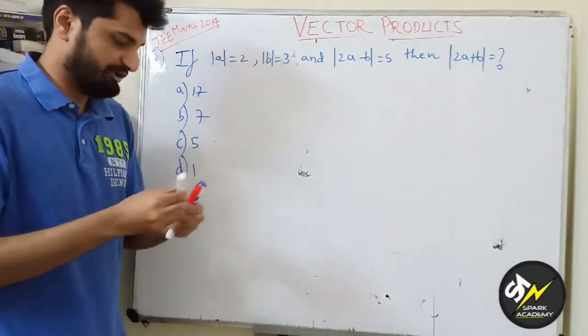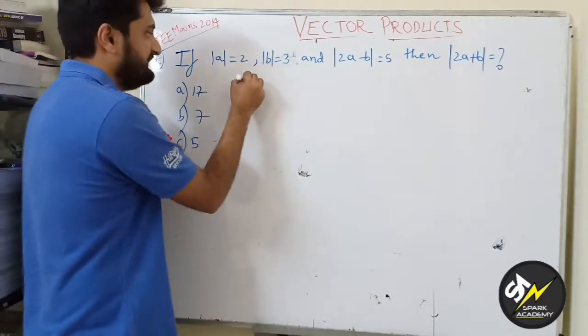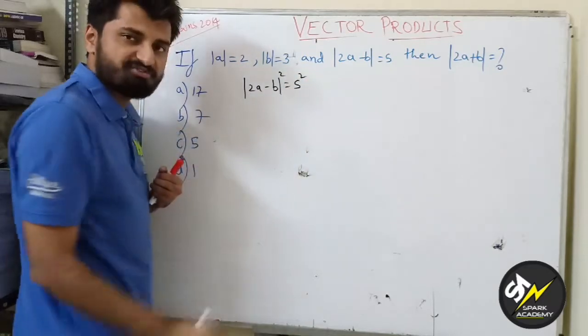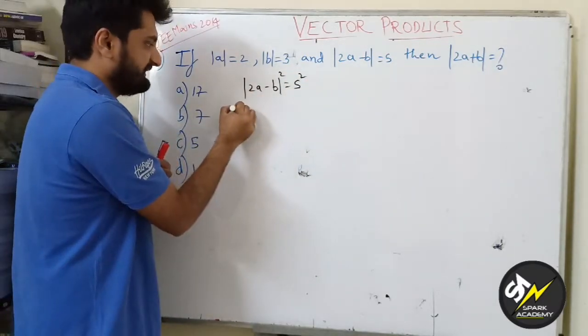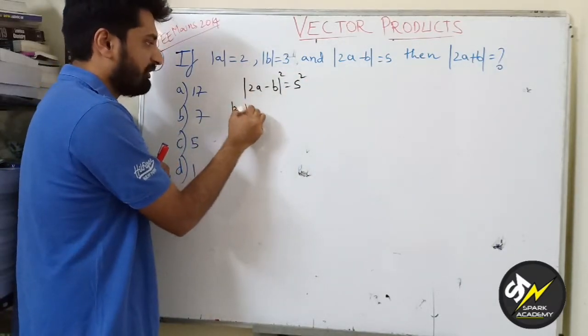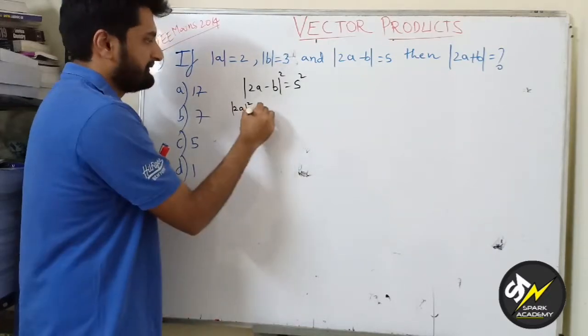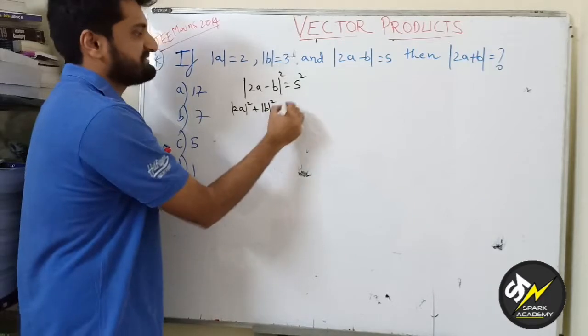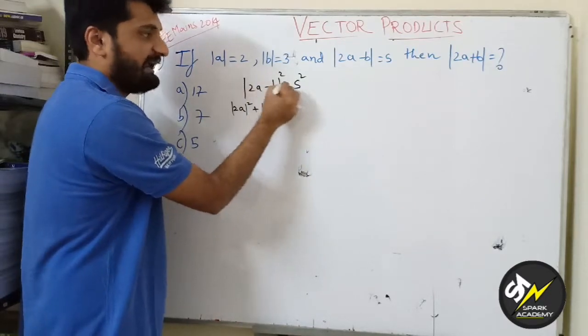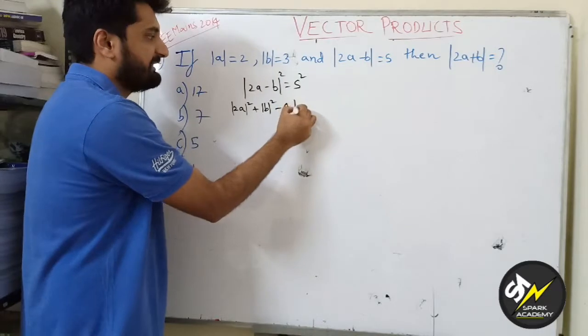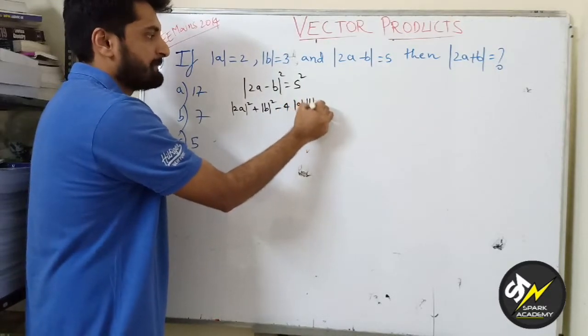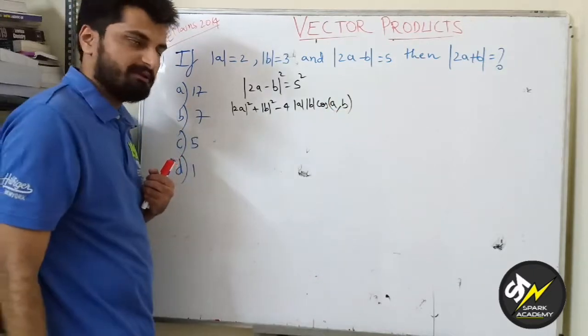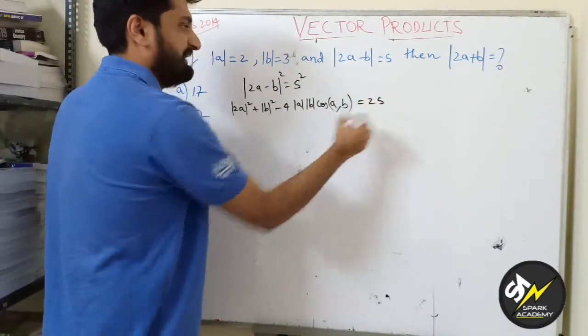In our introduction video we had seen that if |2a - b| is equal to 5, I can square on both sides. So this I can write as |2a|² + |b|² - 2 times 2 will be 4 times a·b. a·b I can write as |a||b|cos(a,b). This equals 5² which is 25.